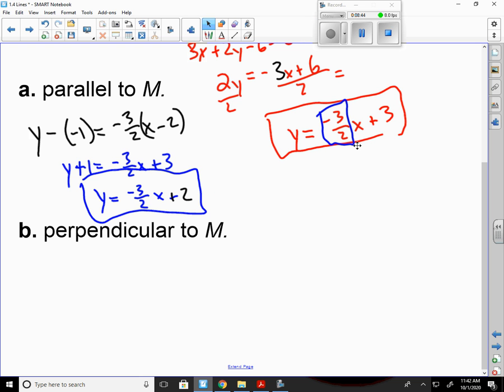For perpendicular, we don't want to have the same slope. We have to have the negative reciprocal. So our new slope is going to be, flip that, it becomes a positive 2 thirds.